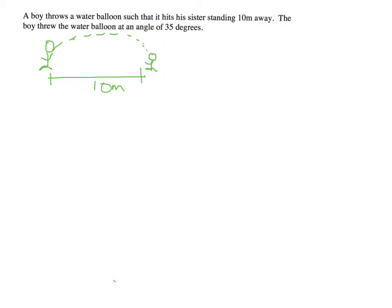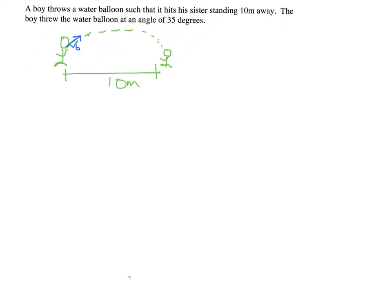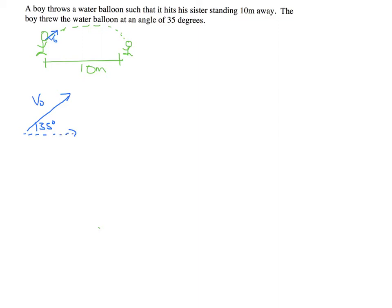To start this problem, think about this initial velocity being at an angle. I'm going to break it into components. Let me draw that a little bigger down here. I have that initial velocity vector going at an angle of 35 degrees, and I can break that vector into components: V0x and V0y.